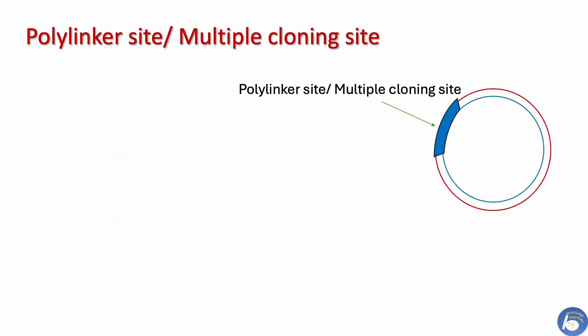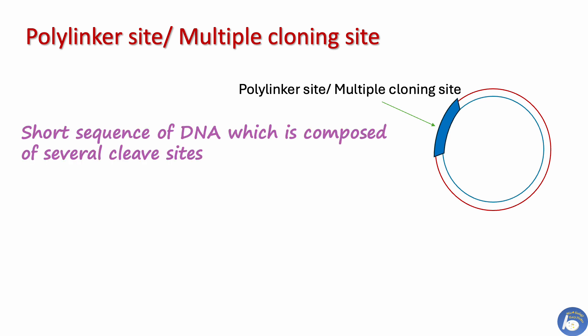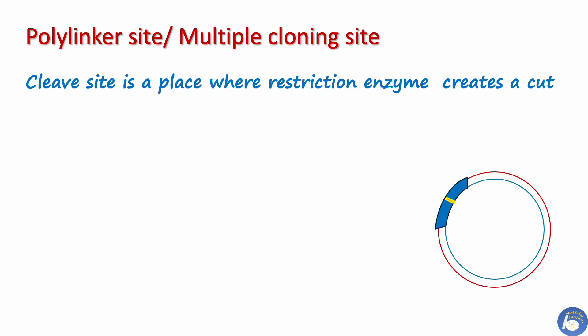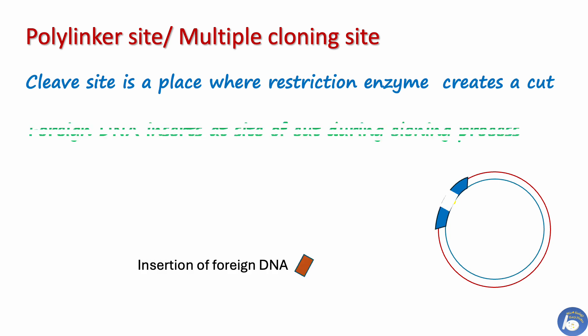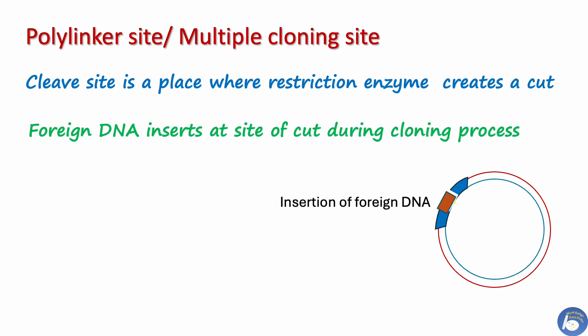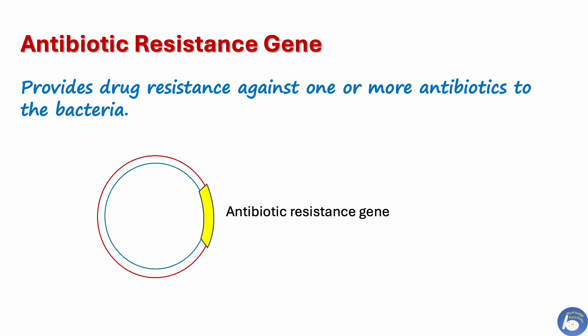The polylinker site is the second most important component of the plasmid, also known as the multiple cloning site. It is a short sequence of DNA composed of several cleavage sites. A cleavage site is a place where a restriction enzyme creates a cut and allows foreign DNA to insert during cloning and other genetic engineering processes.